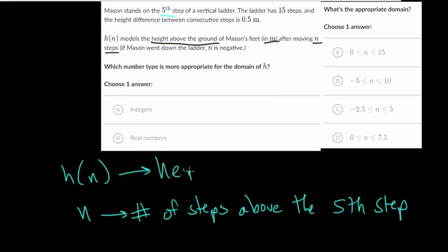So this is the height above the ground, and it's going to be in meters. And the units for n, well, n doesn't really have a unit, it's just what number step that Mason has moved.